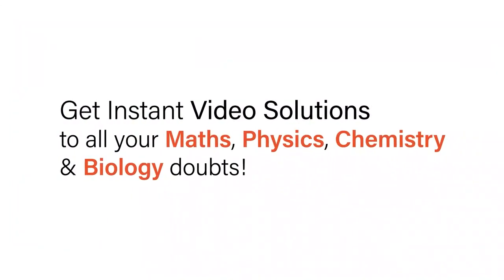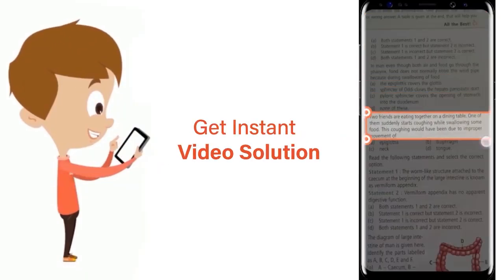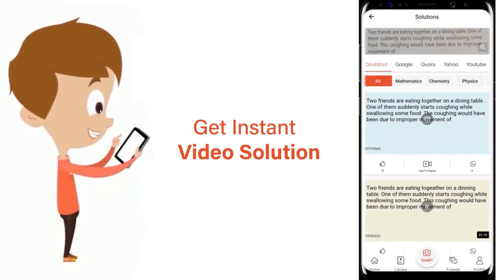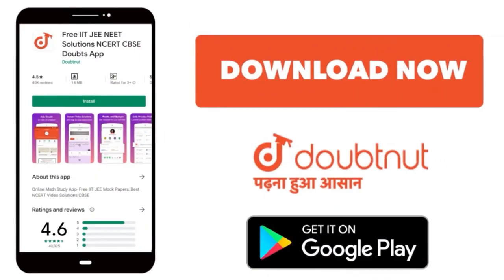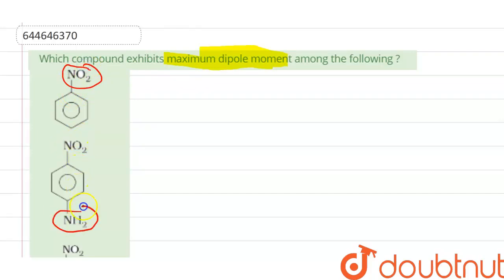With DoubtNet, get instant video solutions to all your maths, physics, chemistry, and biology doubts. Just click the image of the question, crop it, and get instant video solution. Our question is: which compound exhibits maximum dipole moment among the following? Here we can see that NO2 and NH2 groups are attached.